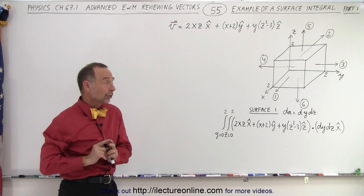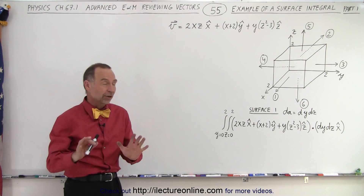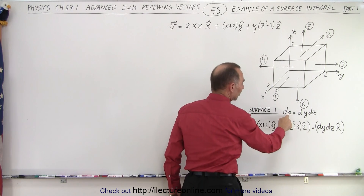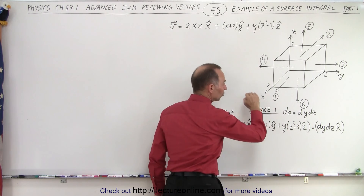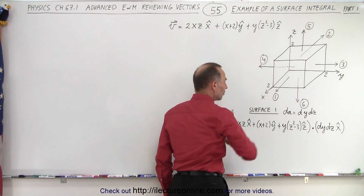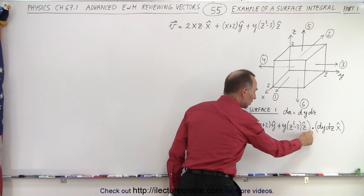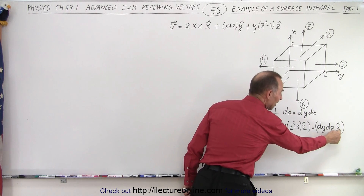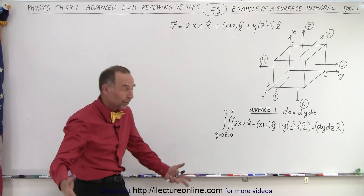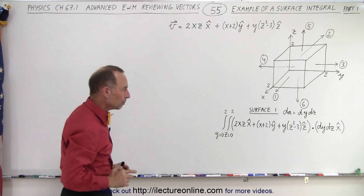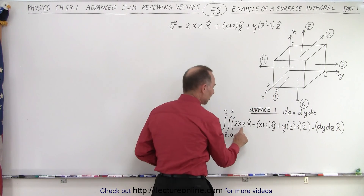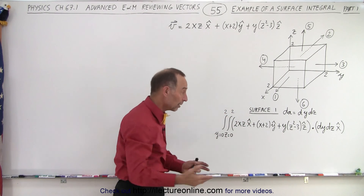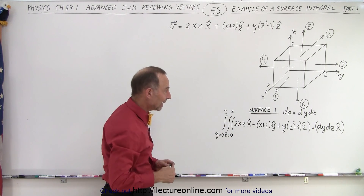We'll probably need more than one video to do that because I'll probably run out of board space. We started already on surface one — that's the front surface right here. Notice that dA would be dy times dz, the change in the y direction and change in the z direction, and we're going to take the dot product between the vector and dA. The magnitude of dA is dy dz and it's pointing in the x direction, perpendicular to the surface. When we take the dot product, only the x term will survive; the y and z components will not exist after the dot product because there's no counterpart in dA.